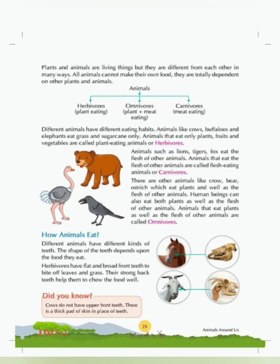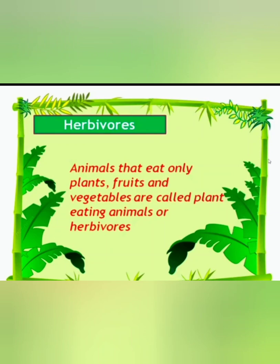Different animals have different eating habits. Animals like cows, buffaloes and elephants eat grass and sugarcane only. Animals that eat only plants, fruits and vegetables are called plant-eating animals or herbivores.